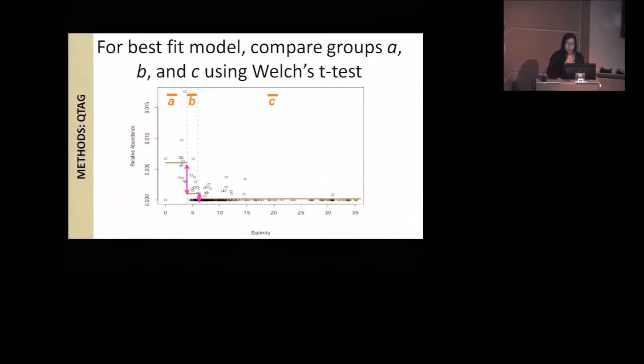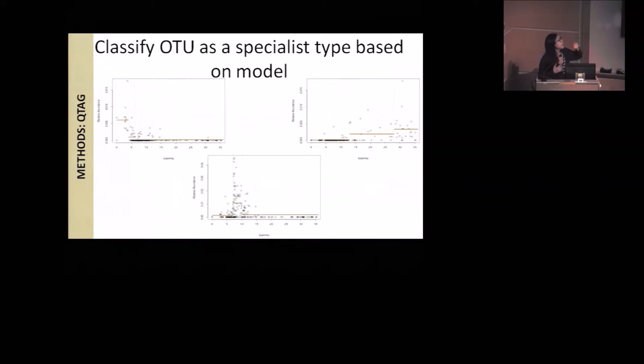If you take three random OTUs from my data set, you can see on the top left, you would intuitively think it's a freshwater taxa because it's abundant in low salinity and not in high salinity. The difference between mean A and C is significant if you do a Welch's t-test. So this is a freshwater taxa. The one on the left would be considered a marine water taxa because it's abundant in group C, not in group A, and the difference is also significant. And then finally, the bottom middle one is a brackish water community specialist because it's abundant somewhere in the middle. Group A and C are significantly lower than group B.